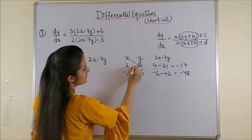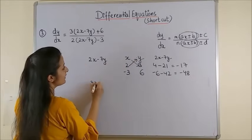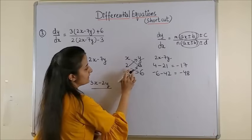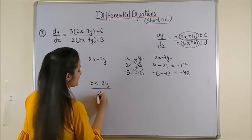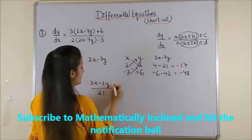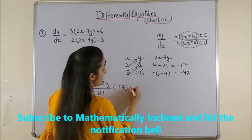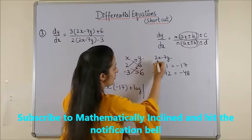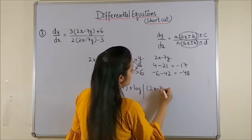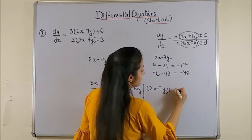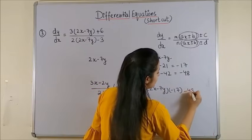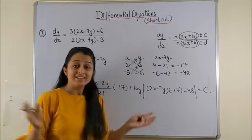Now, let's take the determinant. You get 3x minus 2y. The next one is 12 plus 9. That's 21 into this which is minus 17 plus log mod. You write 2x minus 7y into minus 17 minus 48 is equal to c. That's it.